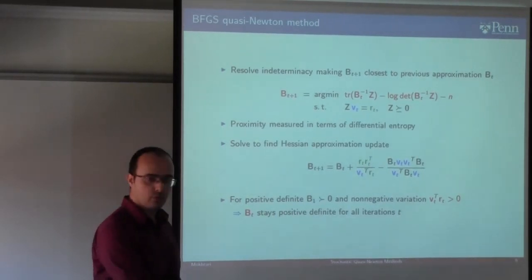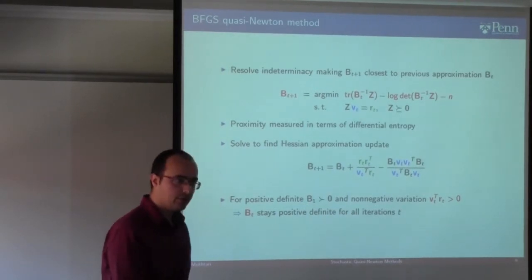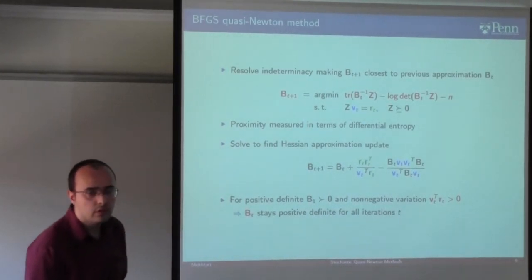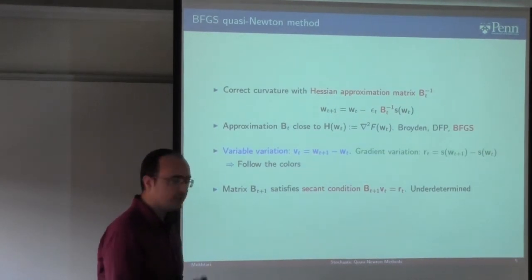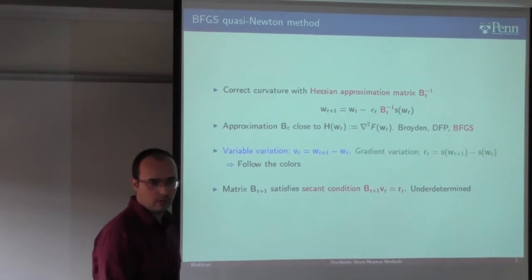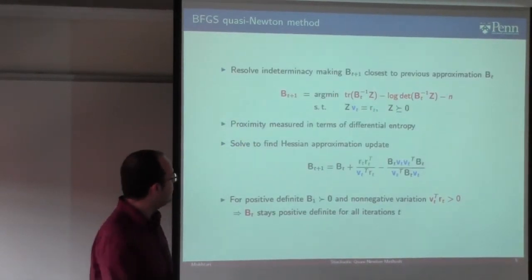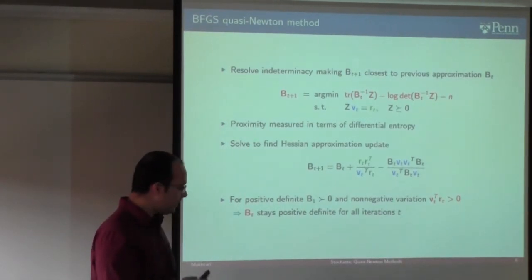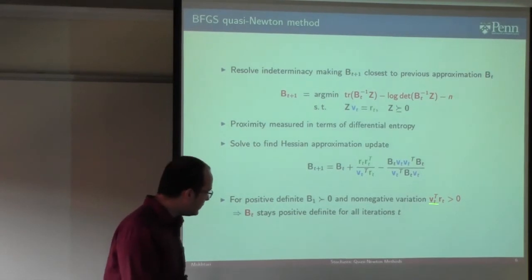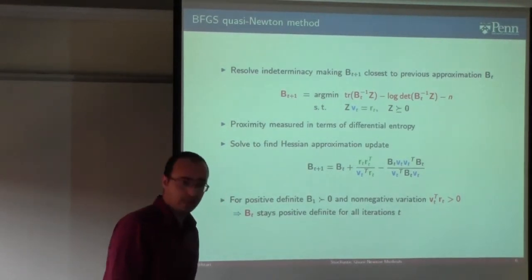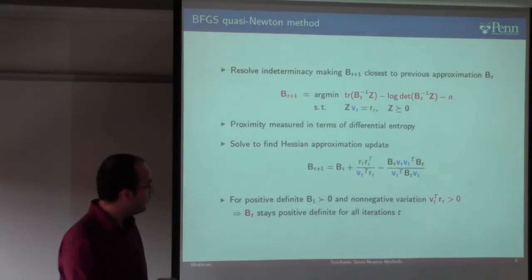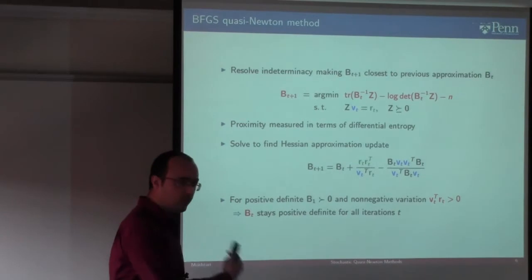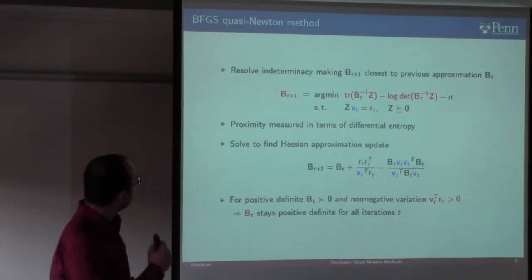BFGS has been shown to improve convergence over gradient descent. Importantly, if you pick the initial Hessian approximation matrix to be positive definite and can guarantee that the inner product of variable and gradient variations is positive, then the matrix stays positive definite for all iterations. This condition is satisfied when the objective function is strongly convex — that's why we need strong convexity for this algorithm.